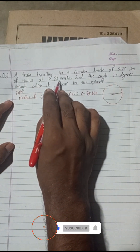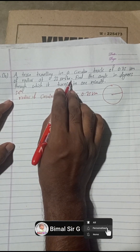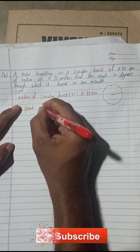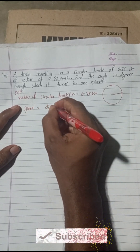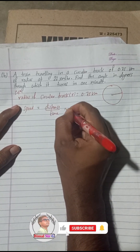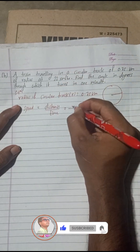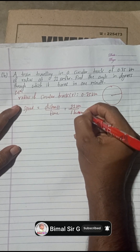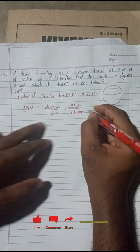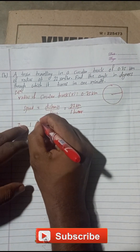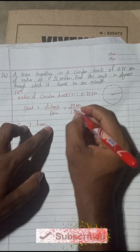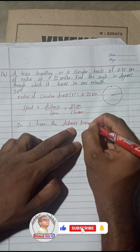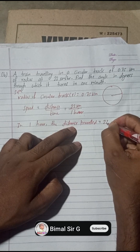Now, the train is traveling at 22 kilometers per hour — this is the speed. We can write: speed is equal to distance by time. The distance is 22 kilometers and the time is one hour. This means that in one hour, the distance traveled is 22 kilometers.